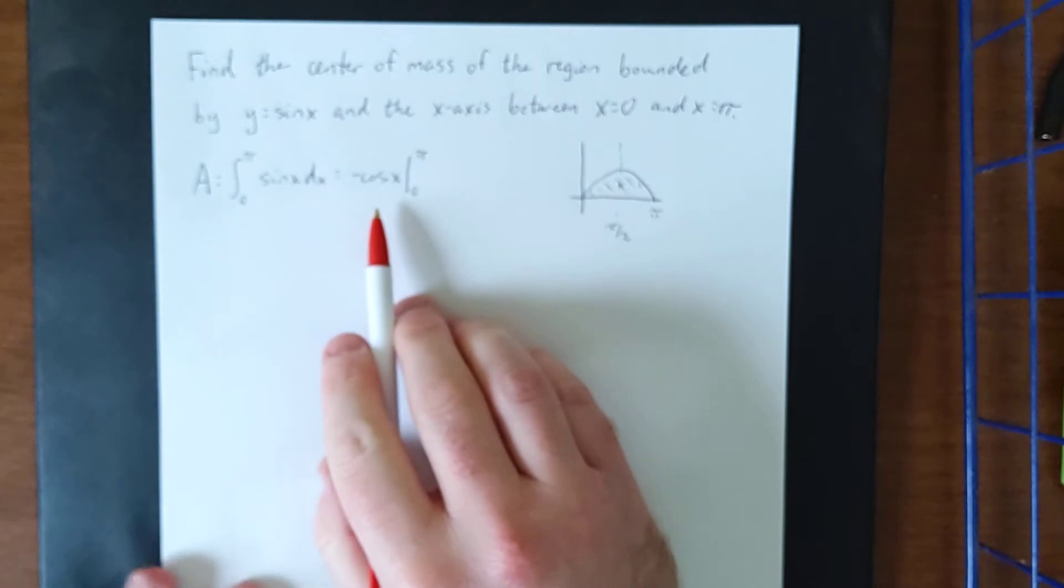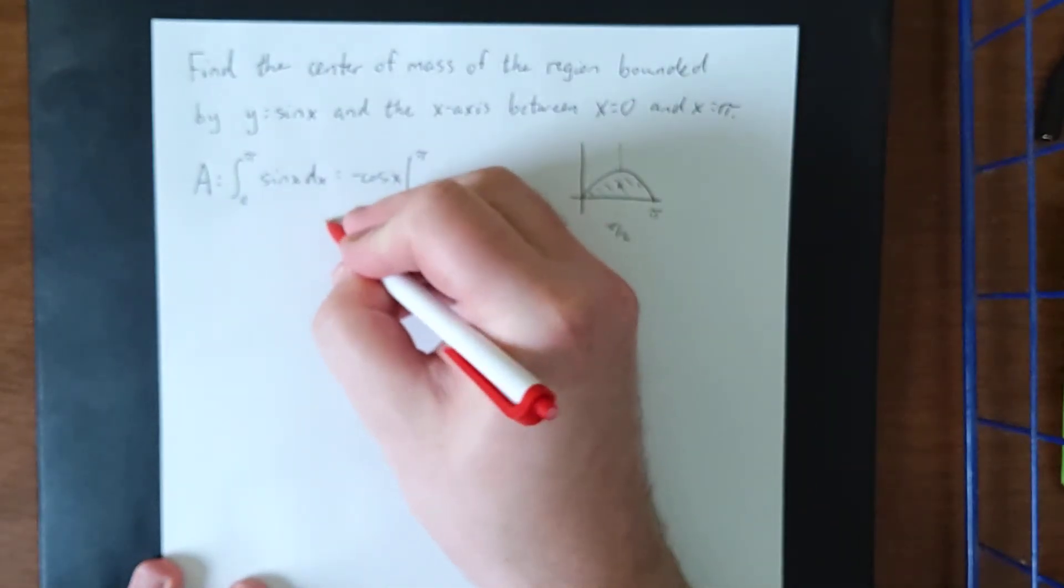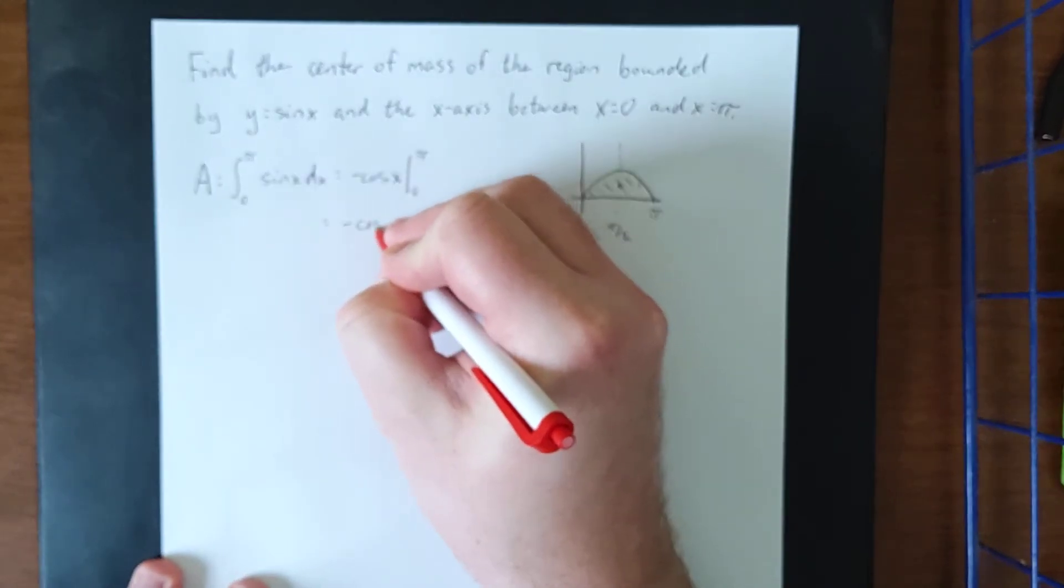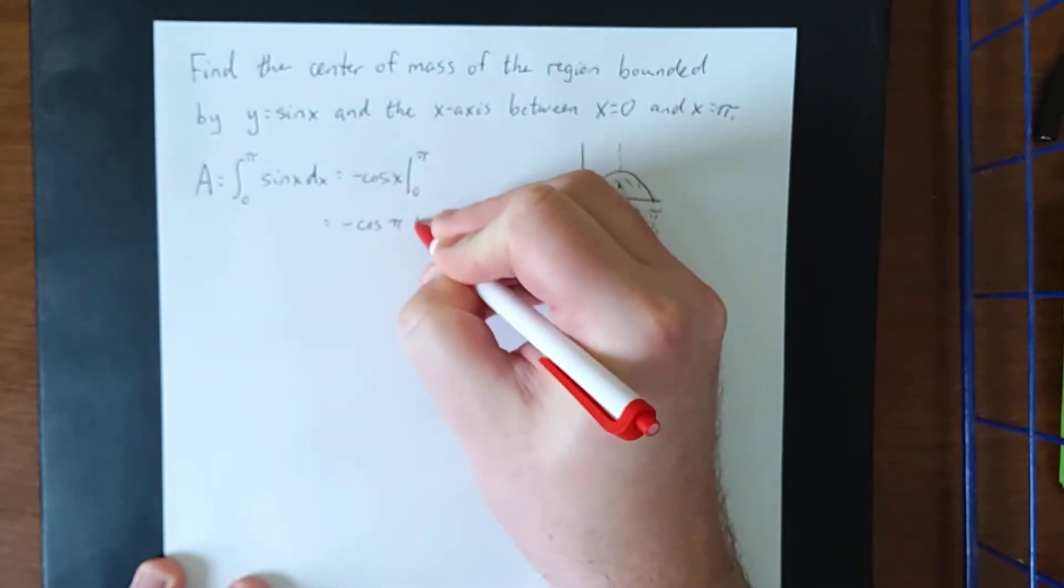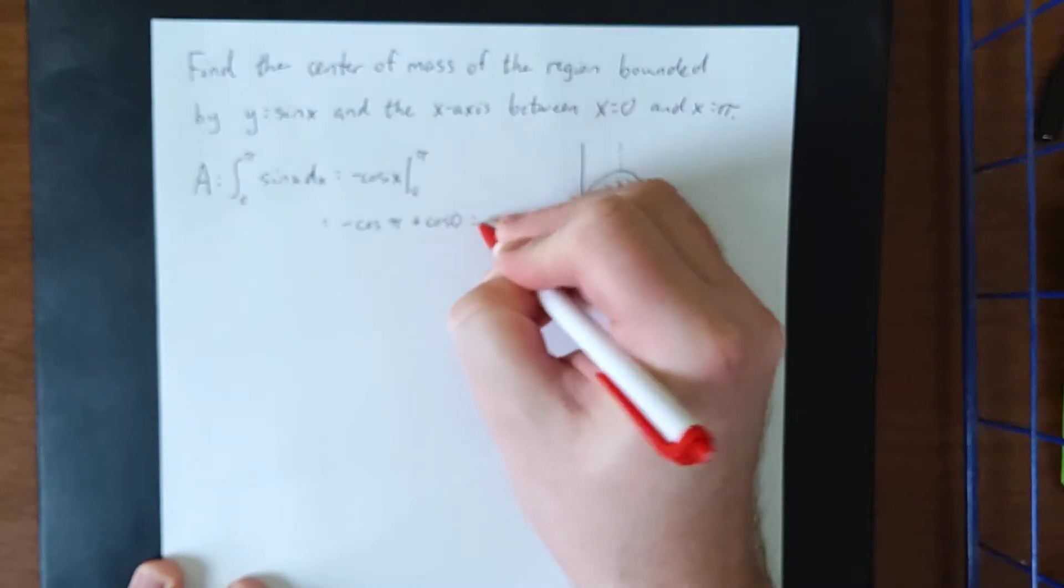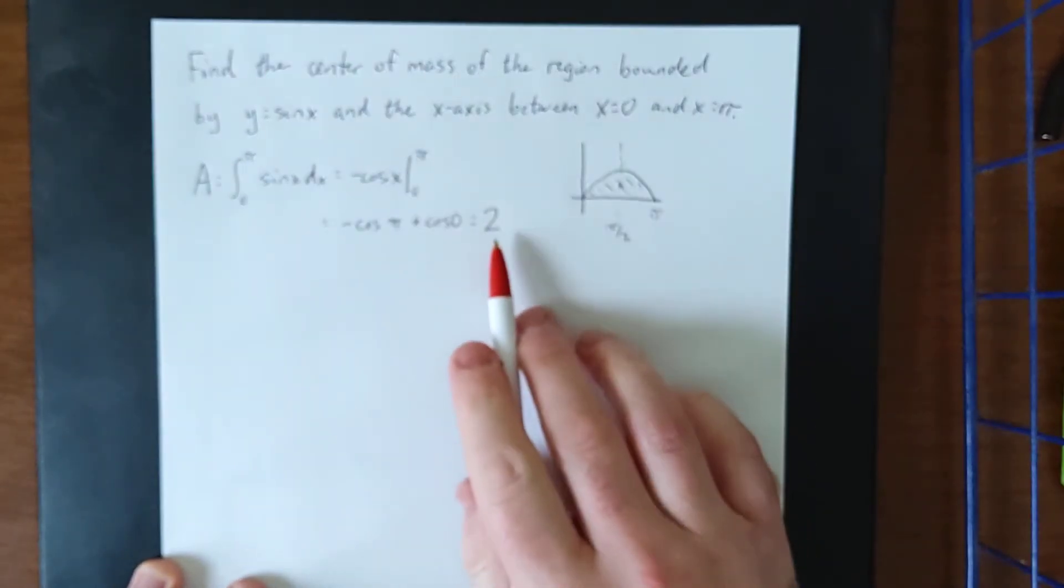Can you integrate the sine function to get negative cosine? With that in mind, plugging in the bounds, we are going to get negative cosine of pi minus negative, so plus cosine of zero. When simplified completely, we'll get that this is one plus one, which will simplify to just two.